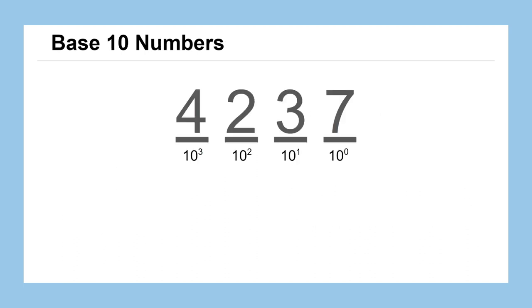Let's just get a quick refresher again on our base 10 number system. So say we have the number 4,237. Each one of these positions in the number means something slightly different. The 4 means there's 4 of 10 to the third power. There's 2, 10 squareds. There's 3, 10 to the first, and 7, 10 to the zeroes.